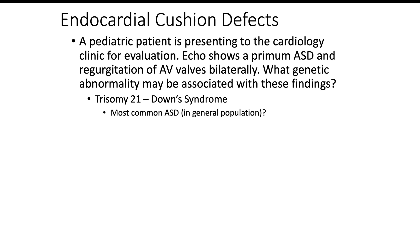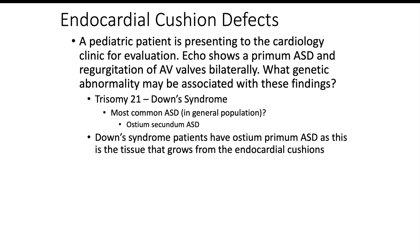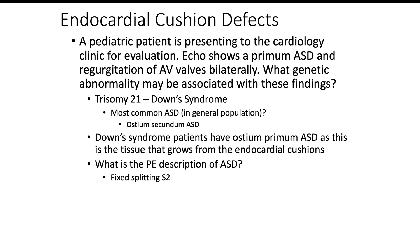If we take a step back, the most common ASD in the general population is going to be your ostium secundum ASD. Down syndrome patients have ostium primum ASDs because that is the tissue that actually grows from the endocardial cushions. If we talk about the physical exam description of an ASD, that is going to be a fixed S2 — high yield for your Step 1. S2 represents the split of the aortic and pulmonic valve closing upon inspiration, and a fixed S2 means you have no variability during your respiratory phases.